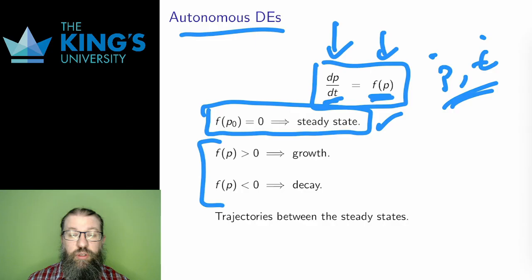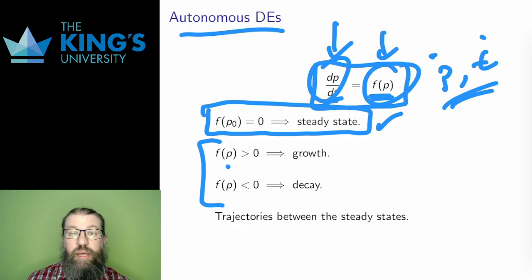Away from the steady states, the right side is either positive or negative, which means that the left side is likewise either positive or negative. And when F of P is positive, that means the derivative is positive, so there is growth. And when F of P is negative, then the derivative is negative, so there is decay. This growth or decay between steady states is called the trajectory of the system.